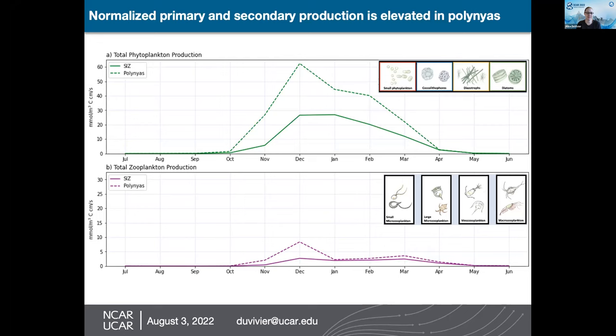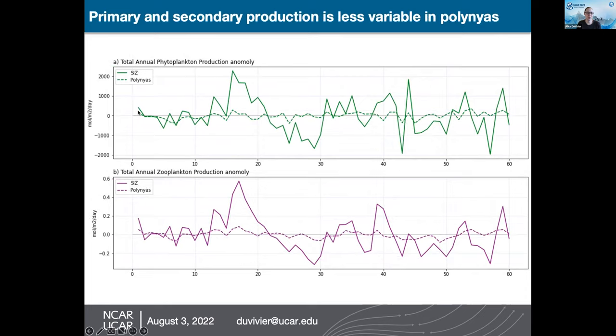Another finding is that phytoplankton production within polynias is less variable year to year compared to the sea ice zone in general. The same is true of secondary productivity. Polynias tend to have fairly consistent production year to year, whereas the broader sea zone is more variable. This may be useful for predators, who can reliably exploit regions where food resources are more likely to be available each year.